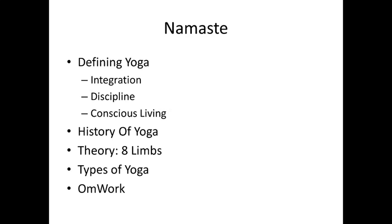To give you an overview of what we're going to be talking about: we're going to define yoga. Regardless of what branch of yoga you're talking about, there are three big ideas that fit them all — integration, discipline, and conscious living. We're going to do a quick history of yoga, cover the eight limbs of yoga, and talk about types of yoga — both Eastern traditional yoga and Western branches. At the end, you'll have your first homework assignment due via the Dropbox by noon on Friday.